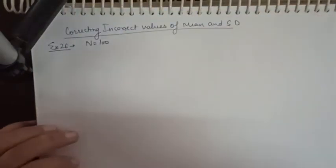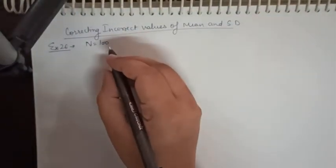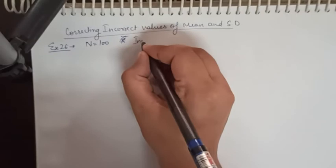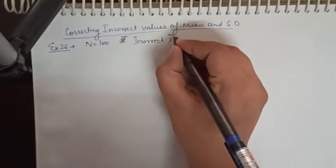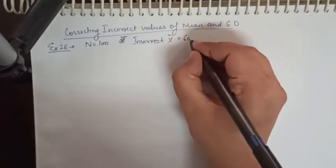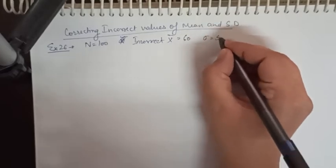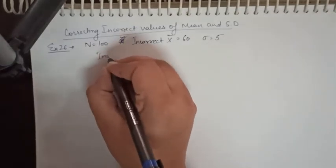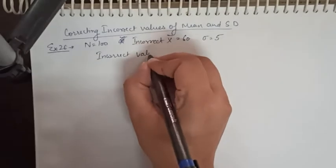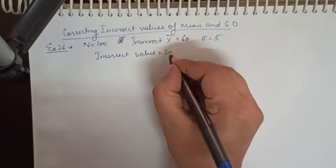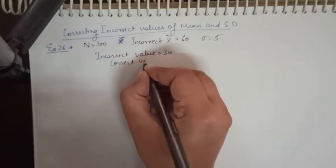Here we have the given statement: 100 observations, the incorrect mean is 60, and the standard deviation is 5. We have an incorrect value — it was discovered that the correct item was 50, which was wrongly copied as 30. So the correct value is 50.